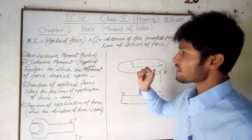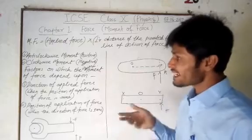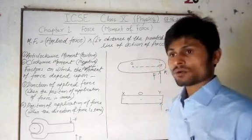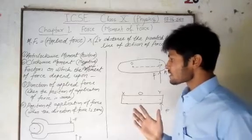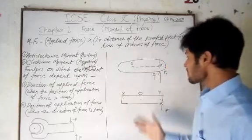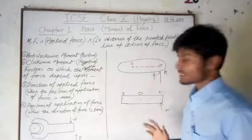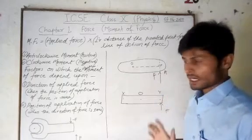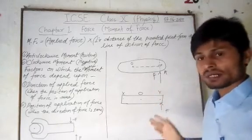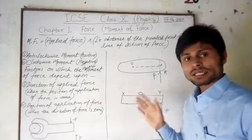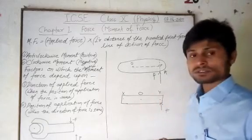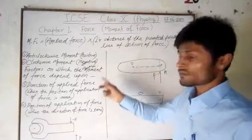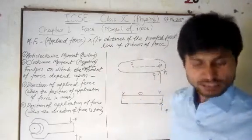The direction of the moment of force depends on two factors. By seeing the figure, you can understand that the first factor is the direction of the applied force, on which the direction of the moment of force — that is, the direction of rotation — depends.